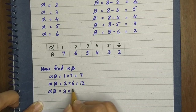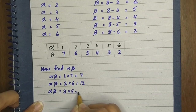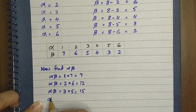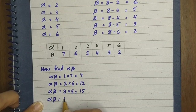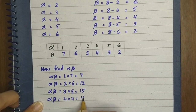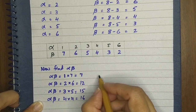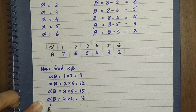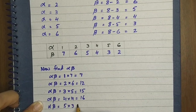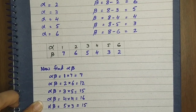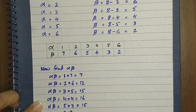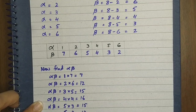When alpha is 3 and beta is 5: 3 times 5 = 15. When alpha is 4 and beta is 4: 4 times 4 = 16. When alpha is 5 and beta is 3: 5 times 3 = 15. When alpha is 6 and beta is 2: 6 times 2 = 12.